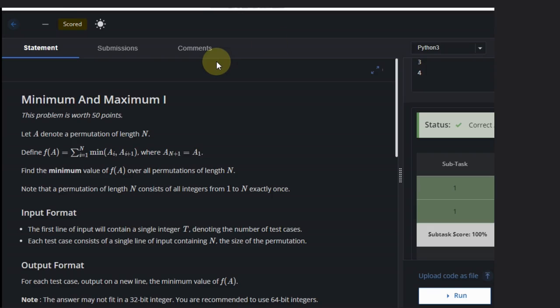Hello, welcome back to our YouTube channel. Today we are going to see the CodeChef problem: Minimum and Maximum i. Let A denote a permutation of length N, and we have a function that is summation of i equal to 1 to N (previously it was i equal to 1 to N minus 1, but now we have i equal to 1 to N).